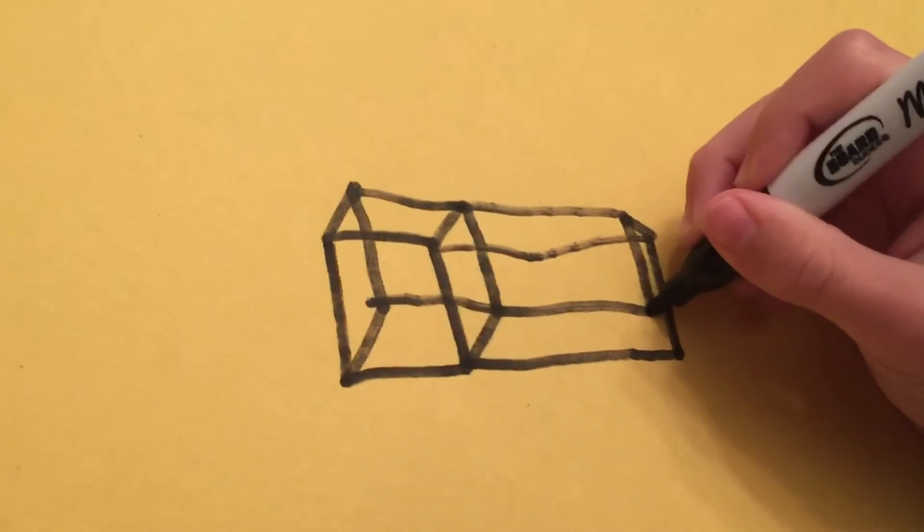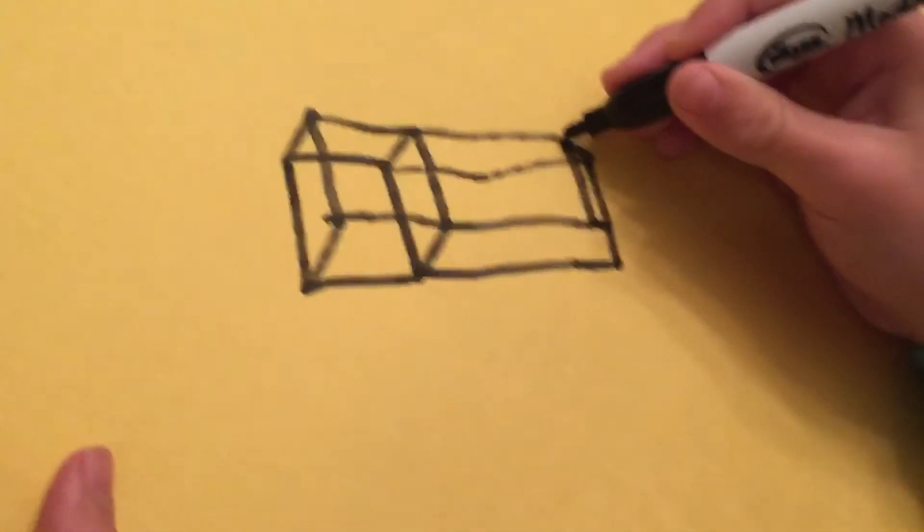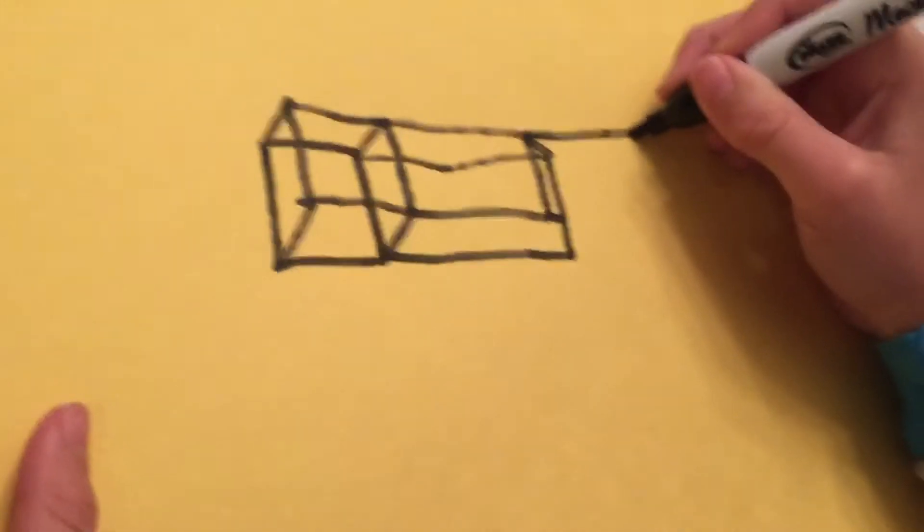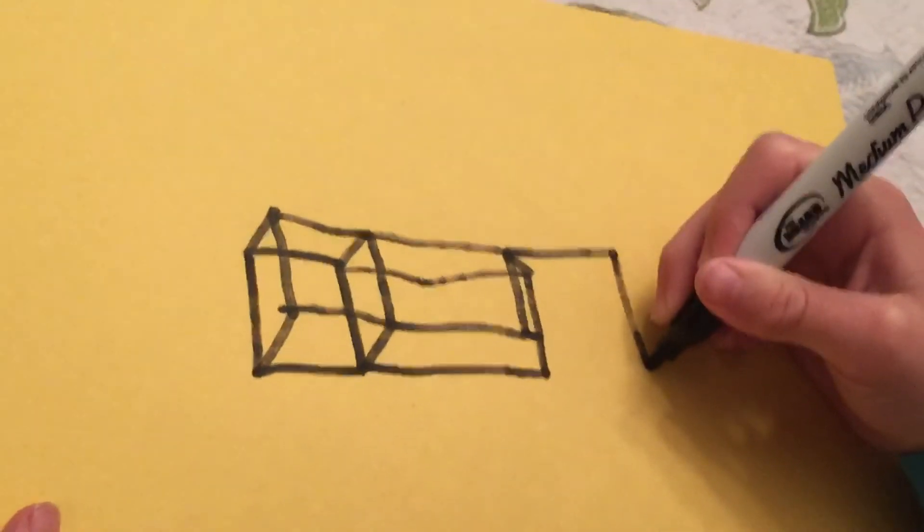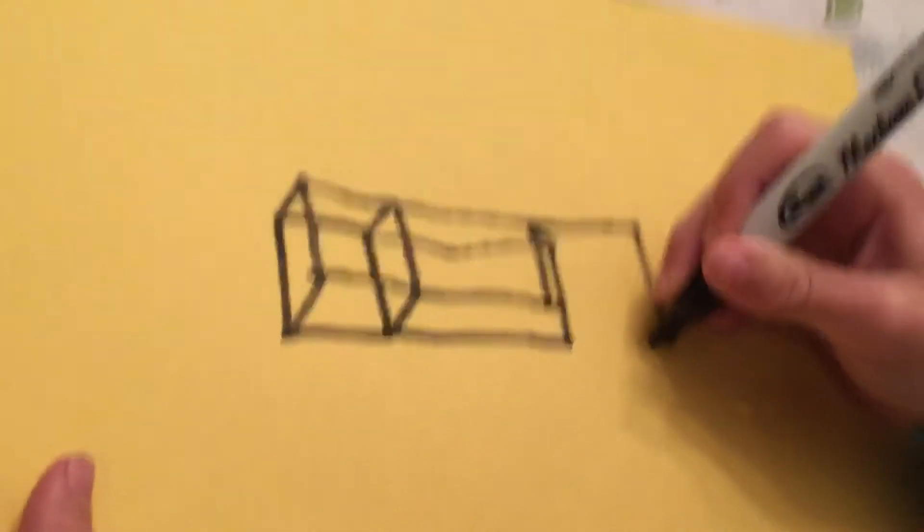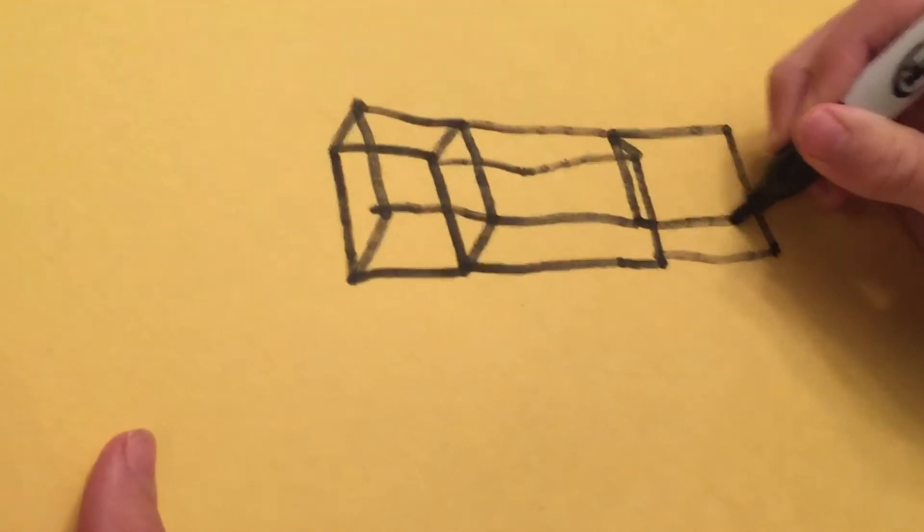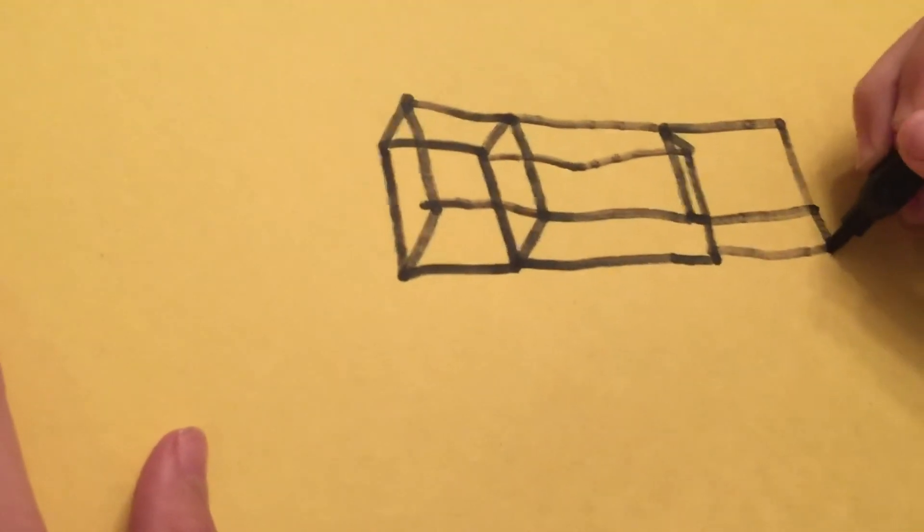Now we continue the path like this. And we're going to make one more little cube like this. It's pretty easy.